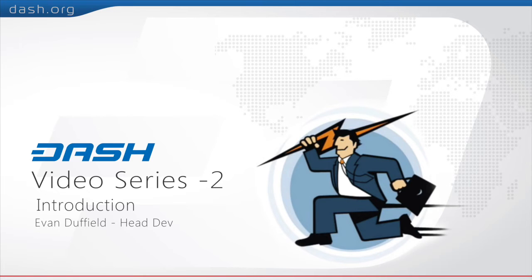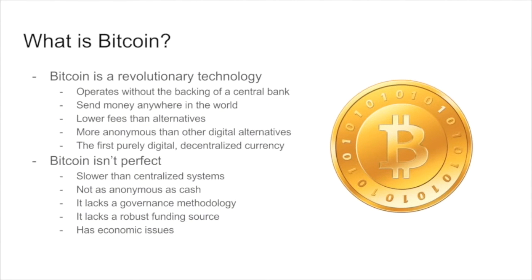So to start, what exactly is Bitcoin? Well, Bitcoin is a revolutionary technology and it is basically a currency that operates without a central bank. What that means is anyone on the network can actually send money from anywhere to anywhere with no one in between. It's also more anonymous than other digital alternatives and it's actually the very first of its kind.